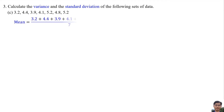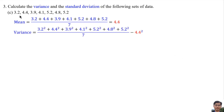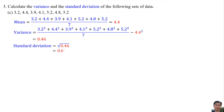Part C: The mean is the average of all the data, so the mean is 4.4. The variance is calculated by squaring all the numbers, adding them, dividing by the total number of data, then subtracting the mean squared. So the variance is 0.46. The standard deviation is the square root of the variance — square root of 0.46 — which equals 0.6782.